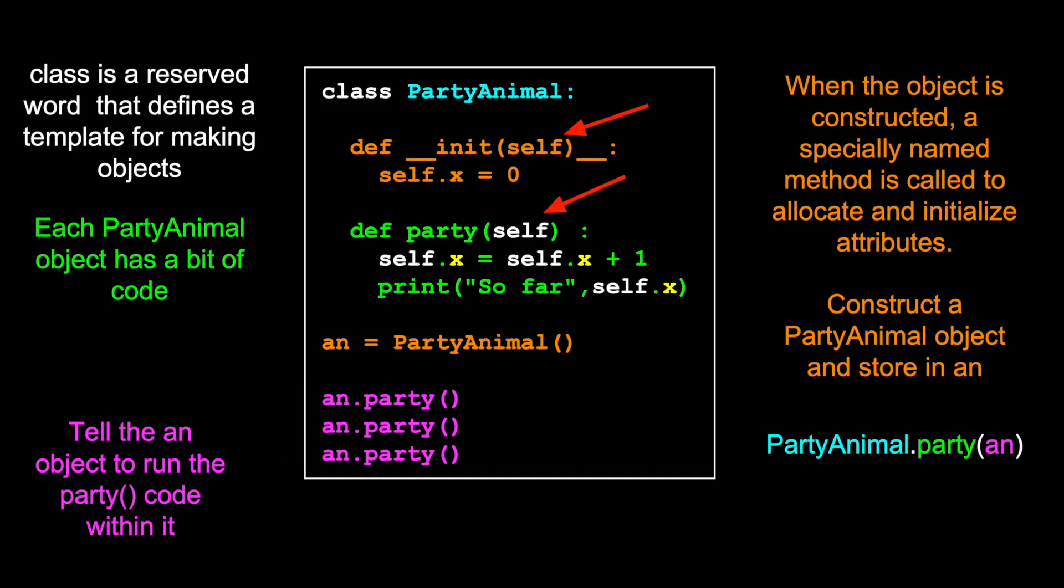Now this self thing, we'll take a look at the self. The self ends up being an alias of an. And so you can look at this syntax. It's just kind of an equivalent of this syntax. It's calling the party method within the party animal class and passing the instance in as the first parameter. And so self ends up being an alias of an each time these are called. This syntax is a short version of that syntax.